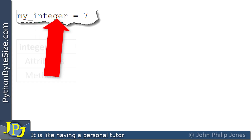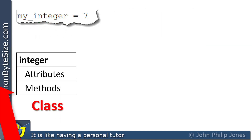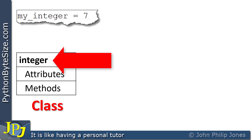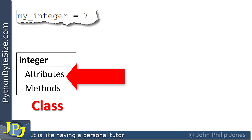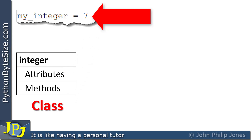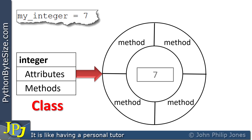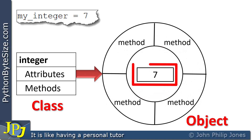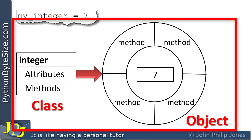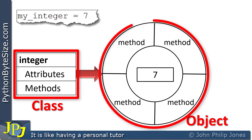We know we're going to need a class. This class is the integer class, which is going to have attributes and methods. When this program statement executes, we get an object based on this class. The object will have various methods, and at its core it has the value of seven. This is a diagrammatic representation of an object — here's the class, this is the object, and the object is based on the class.